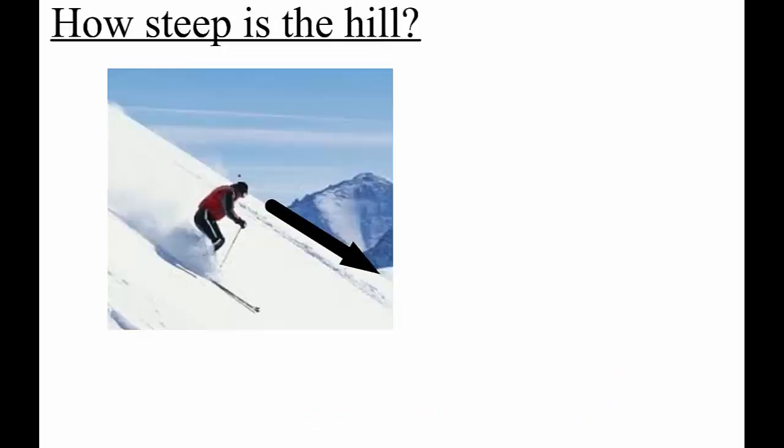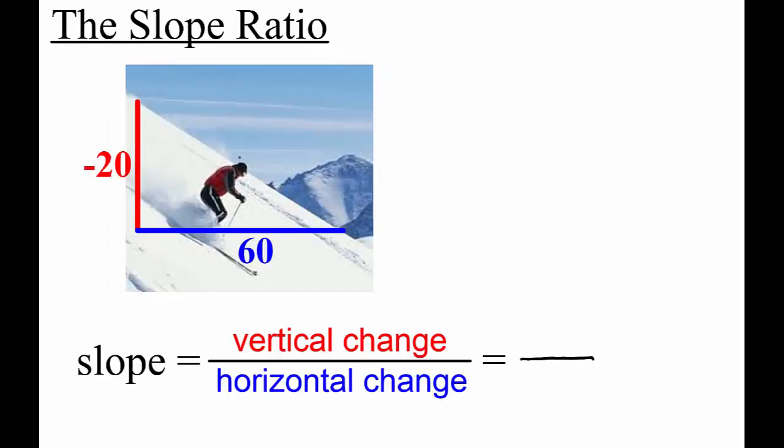Here's a hill with a negative slope. The slope is negative 20 over 60 because from left to right we go down 20 and over 60. We can simplify it by dividing by 20 which gives us negative 1 third.